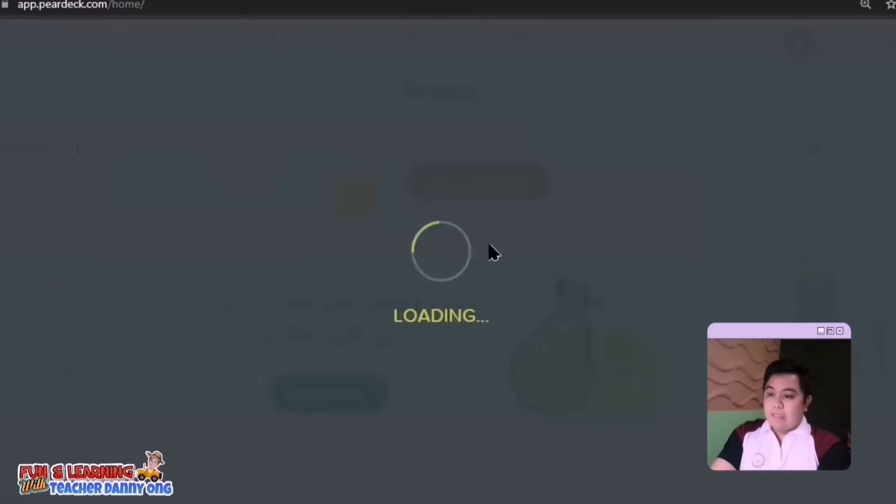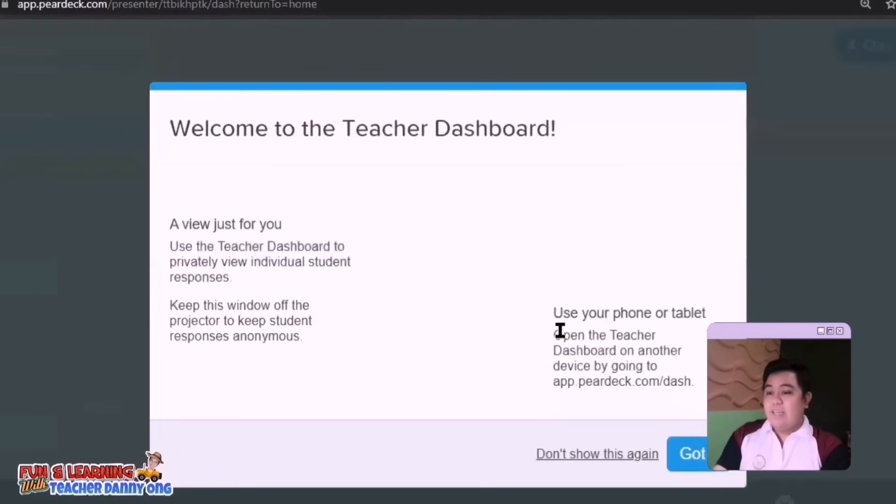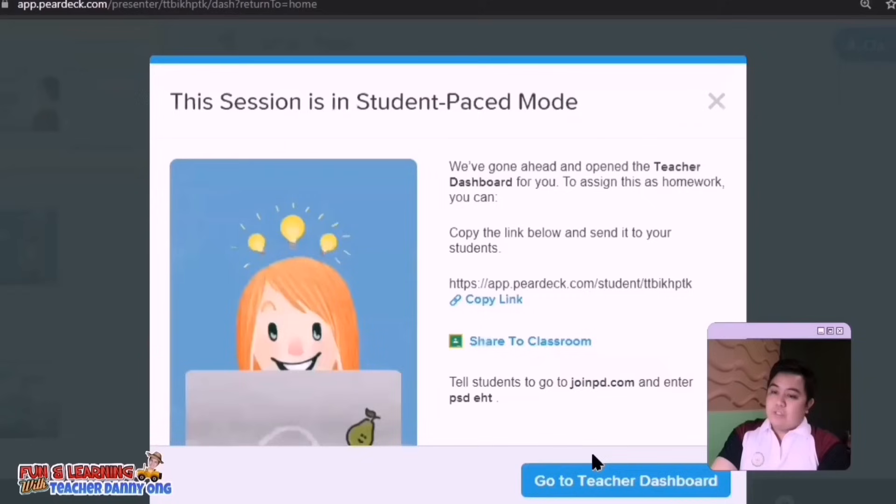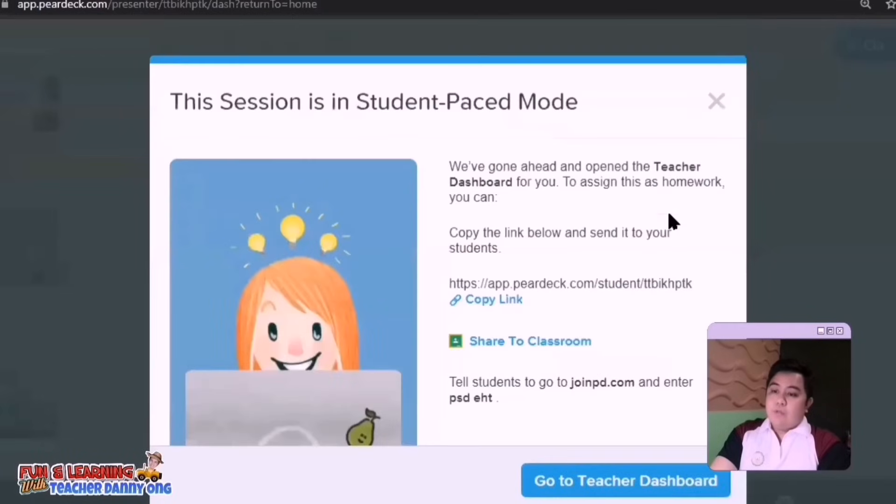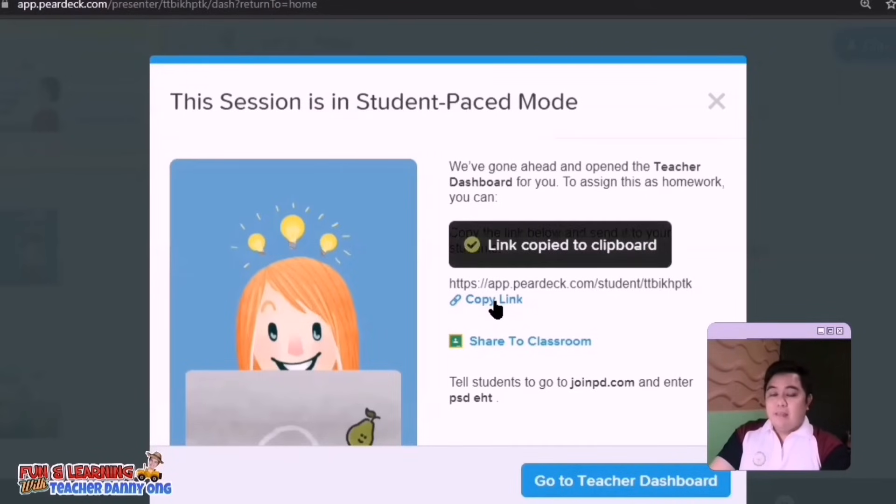Then instantly, the link code will pop up here. Then just simply click copy. Or if not, you may simply click the join code on the upper right corner here. Search for copy link or you directly share this to your Google classroom if you have one. For student-paced, I suggest you give them deadline or time limit in answering the activity. For example, you may state on your presentation that this is a two-day activity and so on.